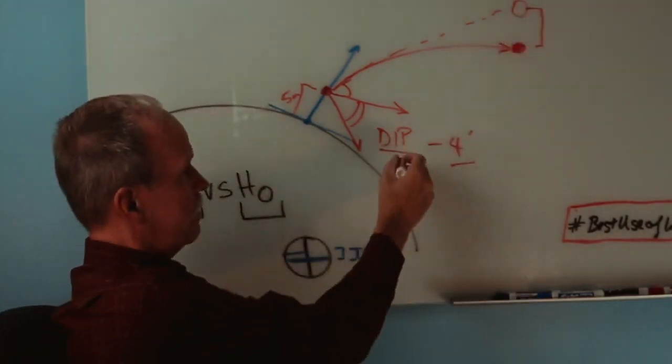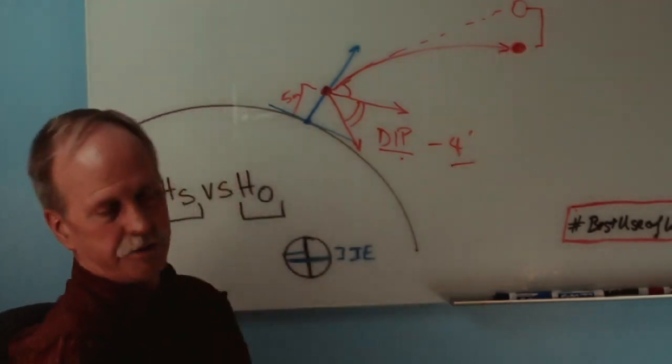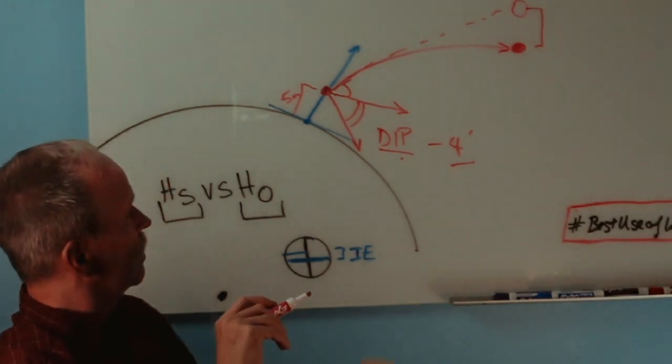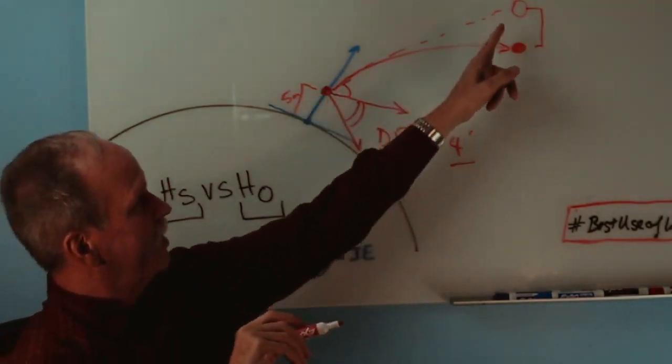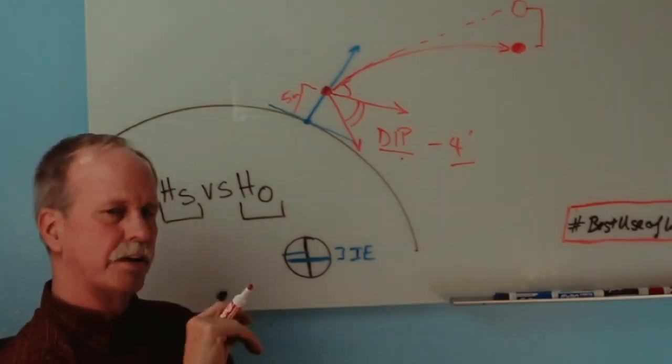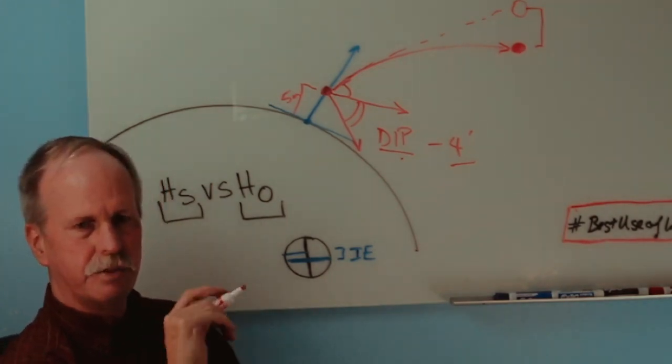So here's our dip error. Here is our refraction error. Now here's the other problem that we run into. And that is our angles have to be to the center of the sun.